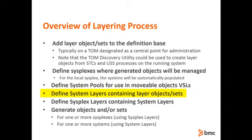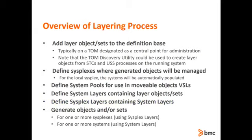After identifying the sysplexes and the systems, you might want to consider defining one or more system pools. A system pool can make the object generated from a layer movable. A system layer is used to group layer objects or sets together, allowing you to selectively generate a subset of objects for a given system. Sysplex layers are made up of one or more system layers. When layer objects, system pools, system layers, and sysplex layers have been defined, we are ready to generate objects.